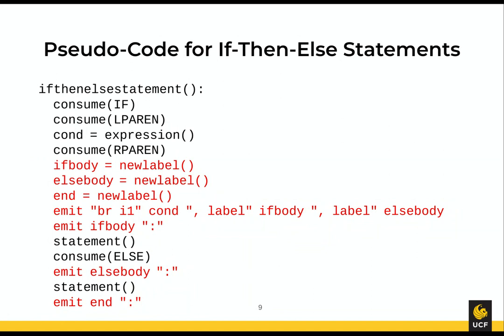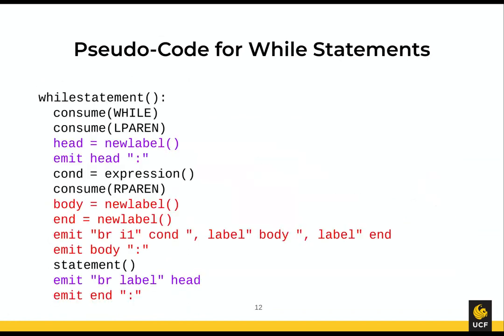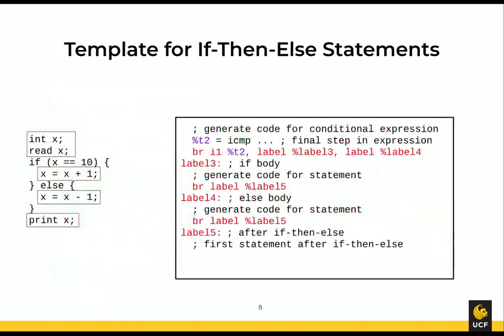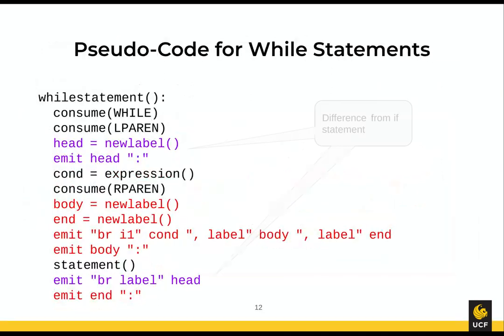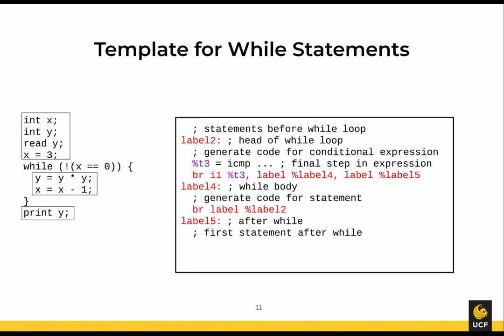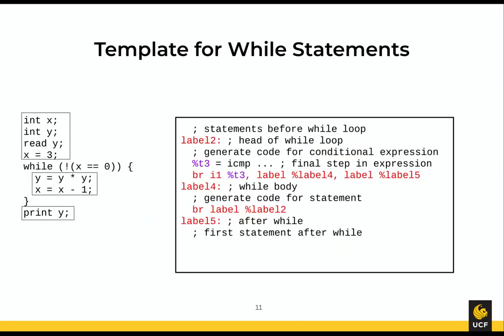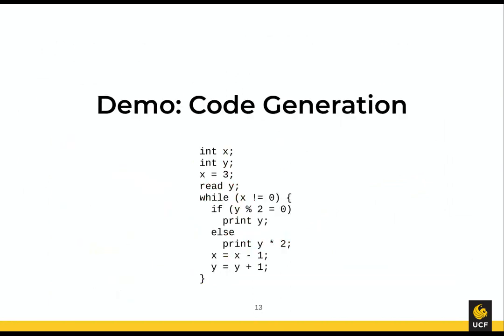Any other questions on Project 3? Last time I promised to go over an example — it was rushing at the end and the audio cut out. My battery was dying. So today, as promised, let's start with doing code generation for this if-then-else statement nested inside of a while loop.